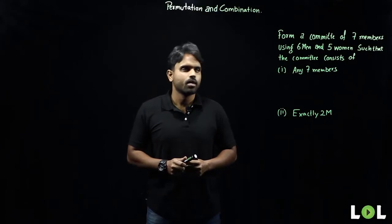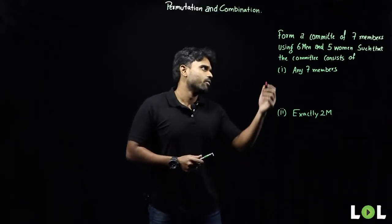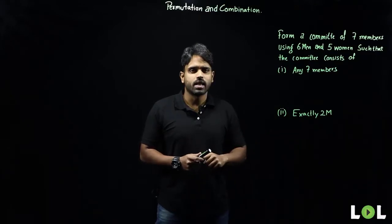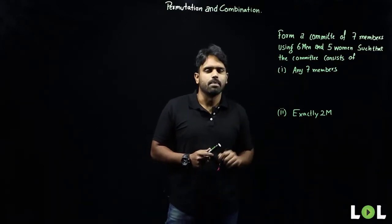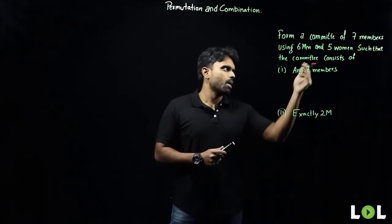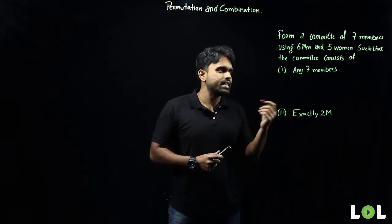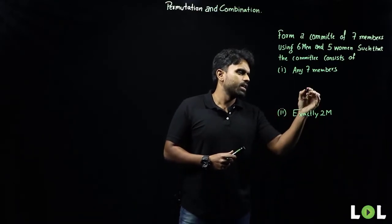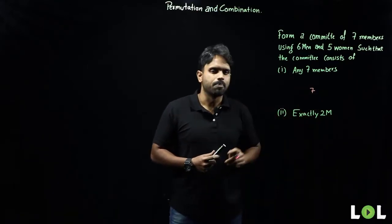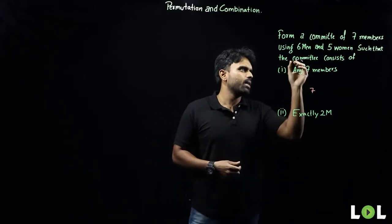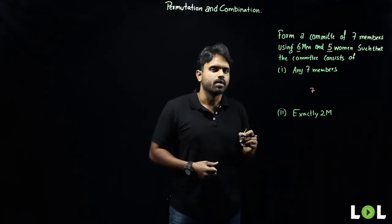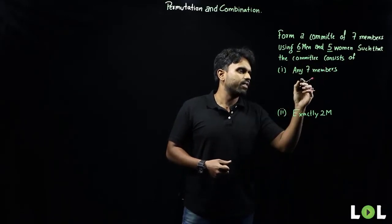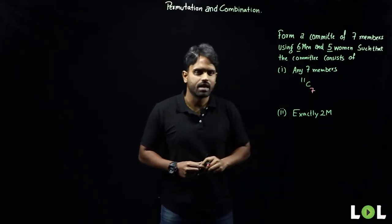The question is: form a committee of seven members using six men and five women such that the committee consists of any seven members. 'Any seven members' means selecting seven people out of a total of eleven — six men and five women — which is nothing but 11C7.